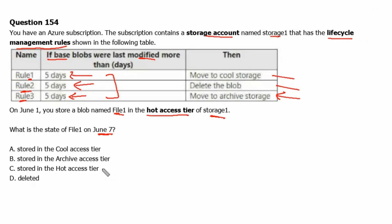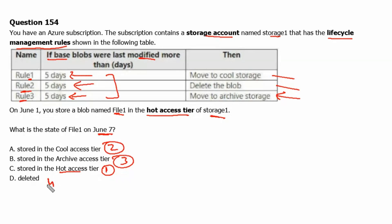The most expensive action would be option C — storing in the hot access tier. The second highest would be storing in the cool access tier. The third highest would be storing in the archive access tier. The least expensive action would be deleting the data. Therefore, option D is the correct answer.